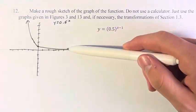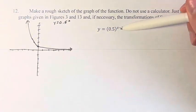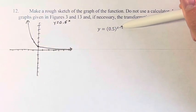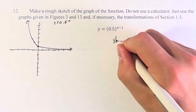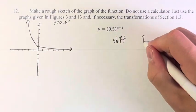So here we have our original function, and we do have a transformation here because we are subtracting 1. So if you have subtraction, that means we have a shift of 1 unit.